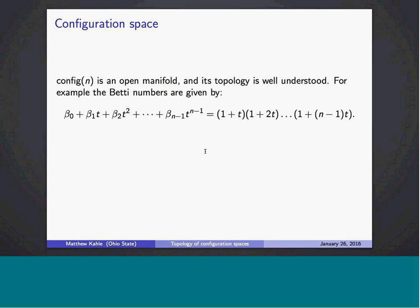With this simple product formula, we can compute all the Betti numbers for any configuration space for any n. If we fix degree i and let n vary, the i-th Betti number turns out to be a degree 2i polynomial in n. So if we let the number of points go to infinity but fix the degree of homology, we can understand those asymptotics exactly — the Betti numbers grow only polynomially fast.